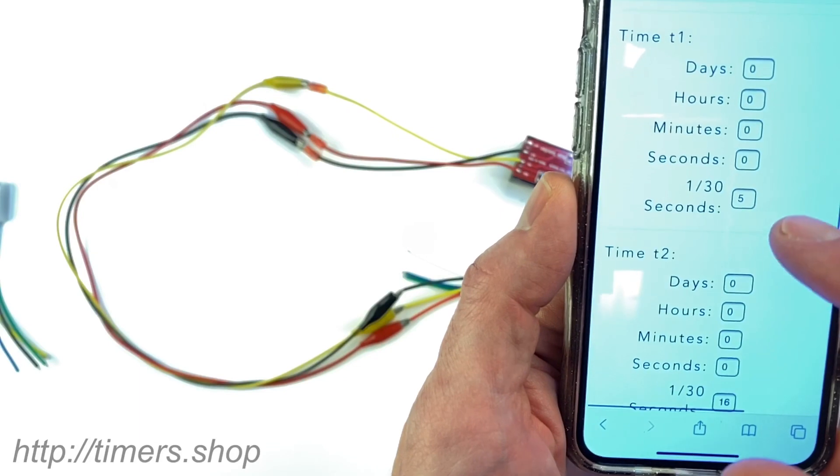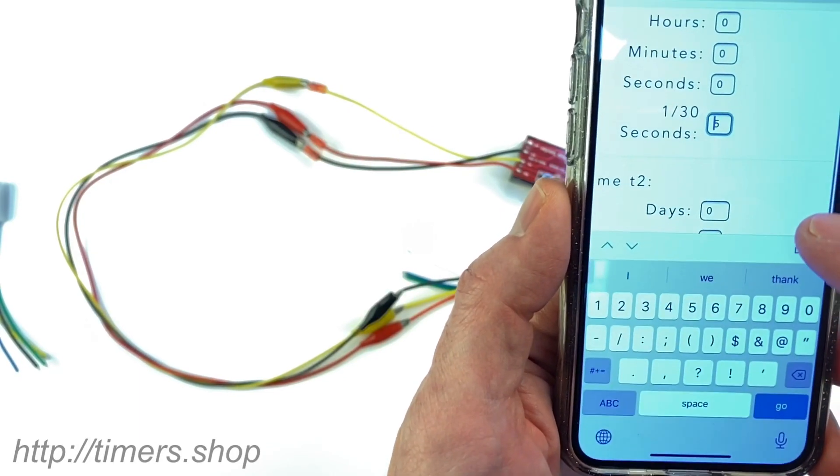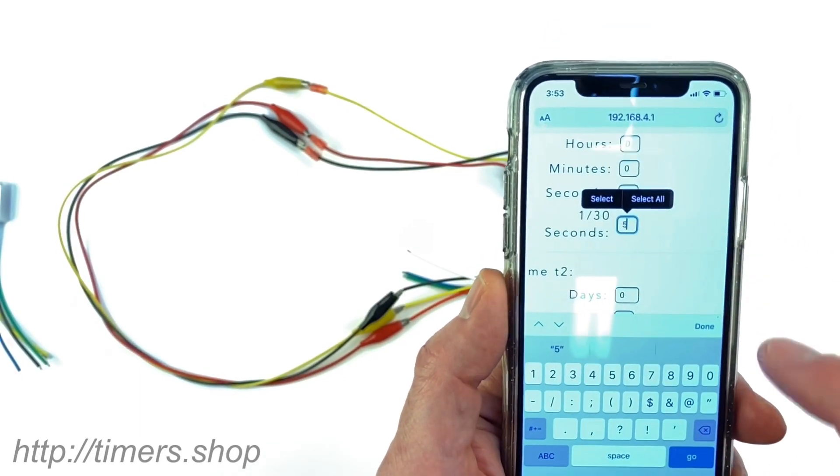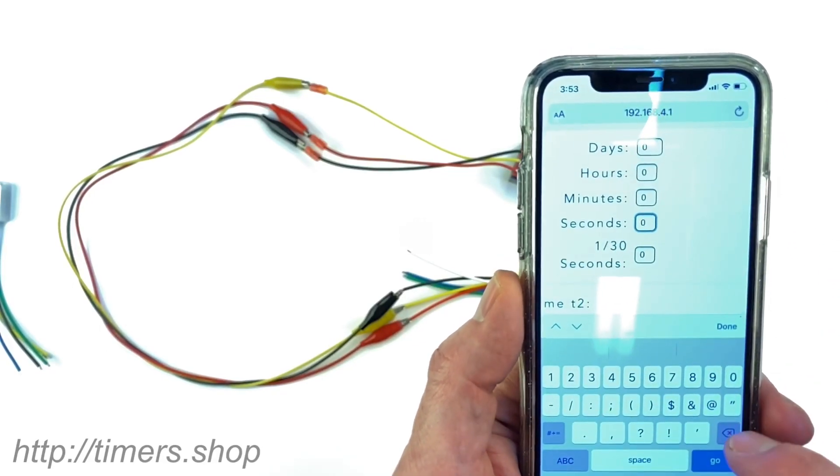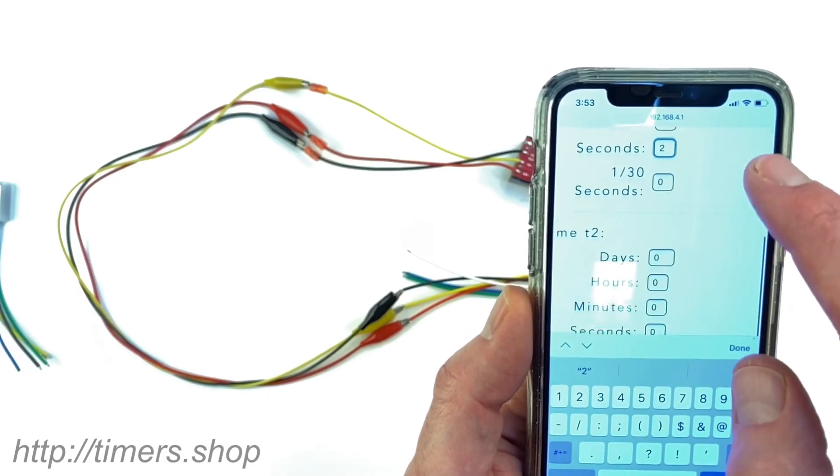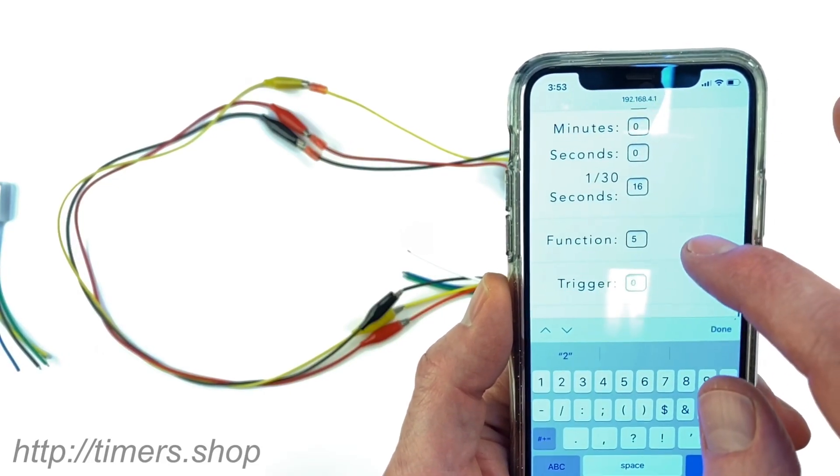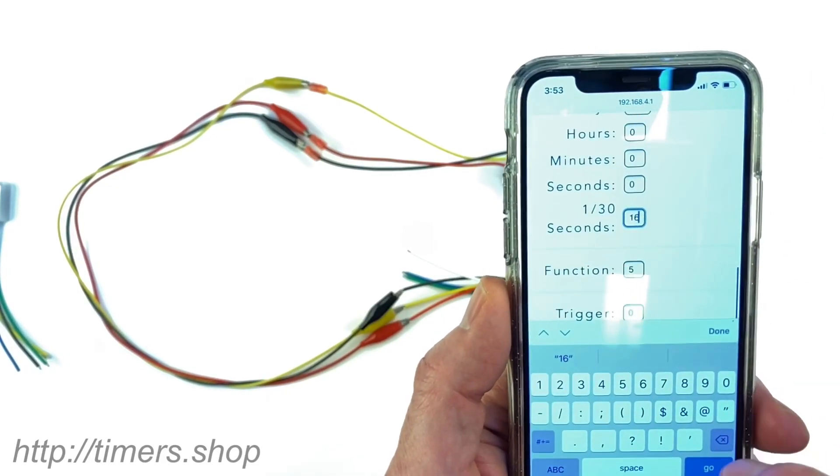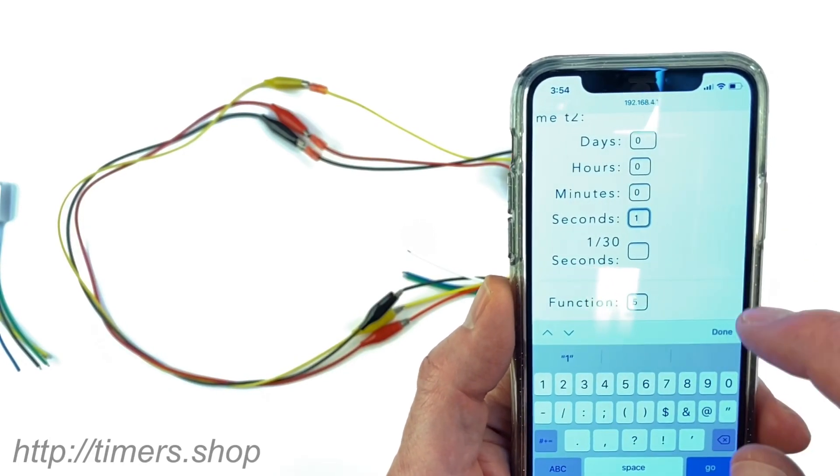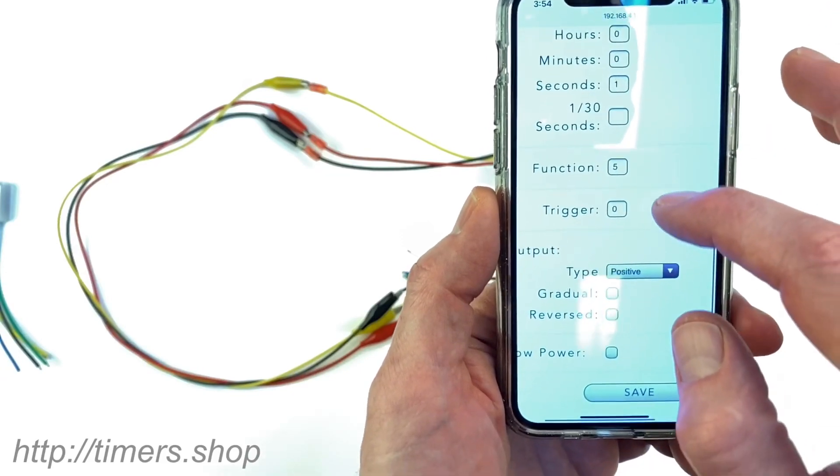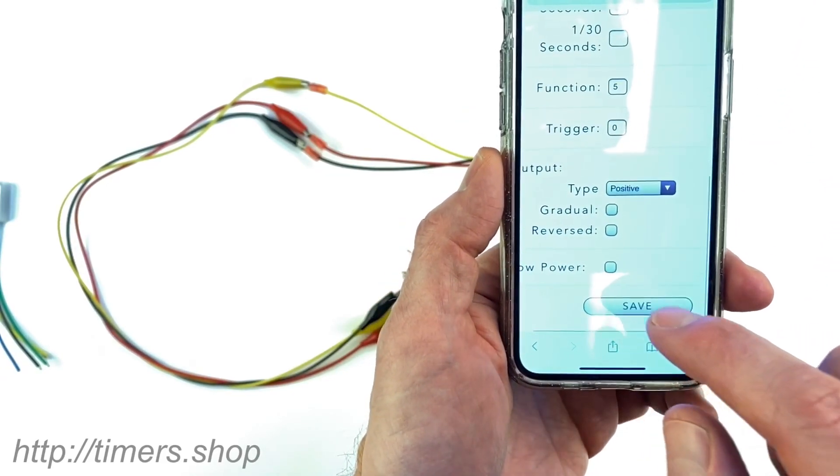What I'm going to change is just the timing. Instead of 1/30th of a second, I'm going to say it's actually zero and I'm going to say it's two seconds, and T1 I'm going to change to one second. I'm going to keep function five and save it.